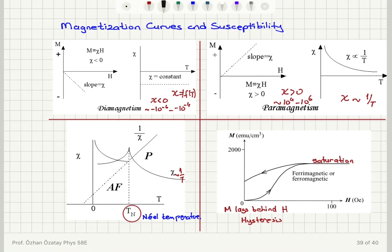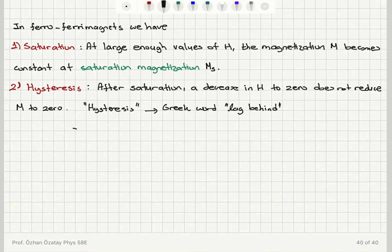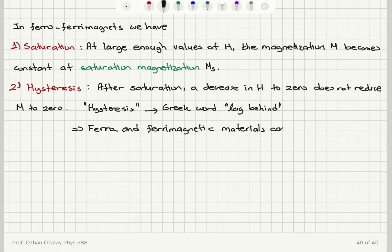Because of this behavior, at zero magnetic field we still have a magnetization, so we can basically make permanent magnets out of these ferromagnetic or ferrimagnetic materials. This allows us to make permanent magnets — ferro and ferrimagnetic materials can thus be made into permanent magnets.